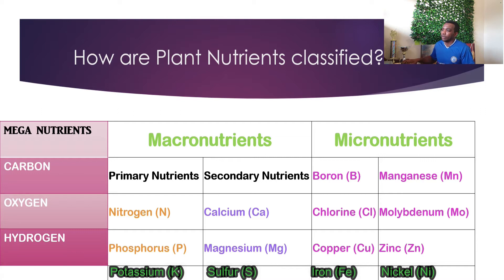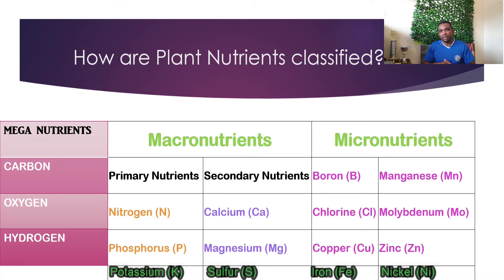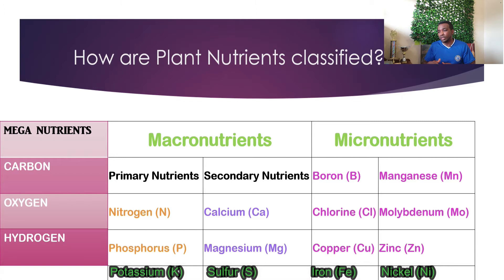Let us start with mega nutrients. Mega nutrients are what we consider the non-minerals — that would be carbon, hydrogen, and oxygen. These are called mega nutrients because the plant uses carbon, oxygen, and hydrogen in very large quantities.